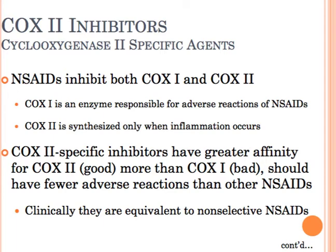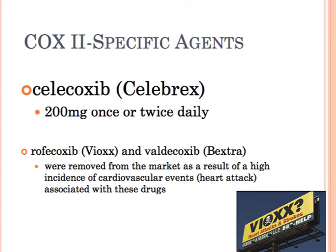Let's talk about COX-2 inhibitors. NSAIDs' action on the COX-1 receptor is the cause of many of their side effects, but not their therapeutic effects. So companies developed more specific agents that target the COX-2 receptor. COX-2 inhibitors work as well as NSAIDs but have fewer side effects. Celebrex is touted to be easier on the stomach and is usually dosed 200 milligrams once or twice daily. There's mixed evidence linking Celebrex or celecoxib with increased likelihood of a heart attack, and other drugs in that class like Vioxx and Bextra were pulled from the market due to increased risk of cardiovascular death.